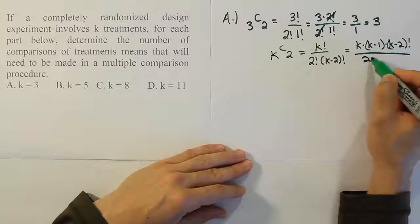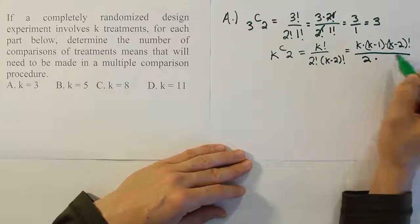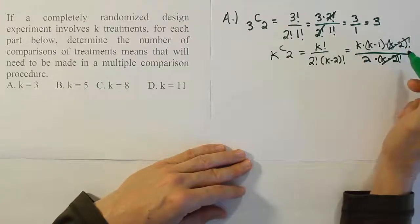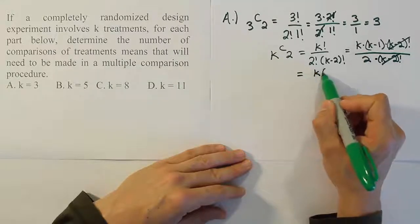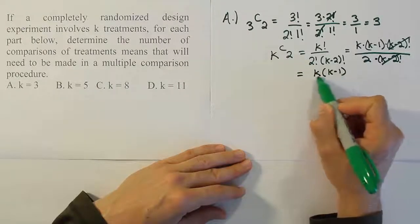The (k-2) factorial terms cancel out because they're the same. So you can use a simplified version of this formula: k times (k-1) over 2.